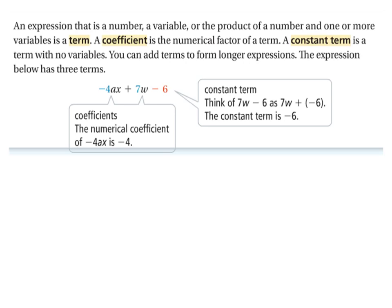Here we're going to talk about terms. Terms can be a number, a variable, or the product of a number and one or more variables. Coefficient is the numeric factor for a term, and a constant term is a term with no variables. This expression shown here has three terms: the negative 4ax, the 7w, and the negative 6. Negative 6 is a constant term, it has no variable part. For the 7w, the 7 is the coefficient, and for the negative 4ax, the negative 4 is the coefficient.